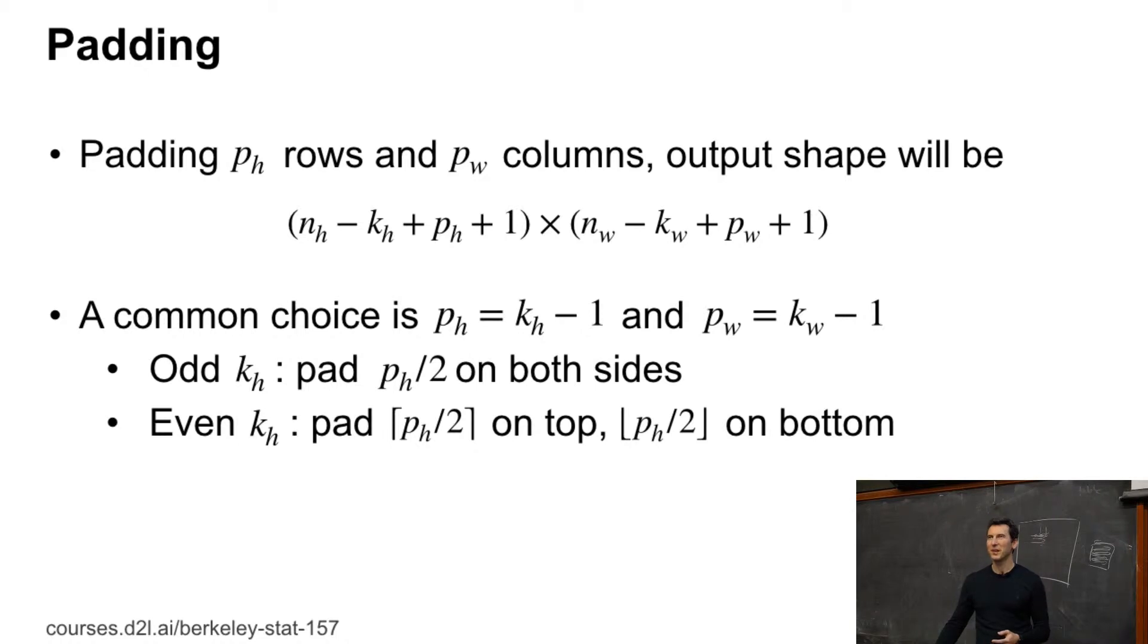So the question, why do people typically use convolutional kernels with an odd size? Why do people typically use 3 by 3, 5 by 5, 7 by 7, but you rarely see a 2 by 2 convolution?